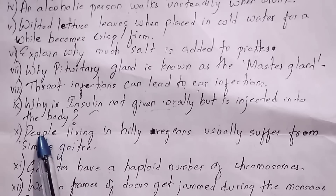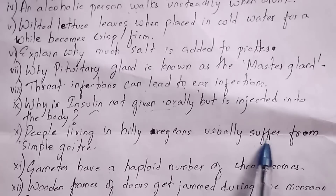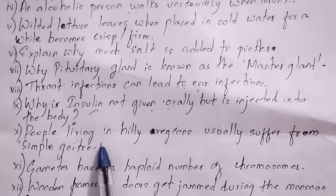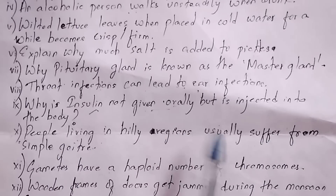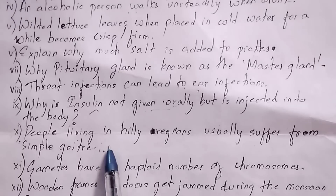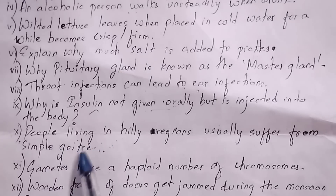Question 10: Why do people living in hilly regions usually suffer from simple goiter? People living in hilly areas usually suffer from simple goiter because there is a scarcity of iodine in the soil and in their diet. Deficiency of iodine leads to simple goiter.